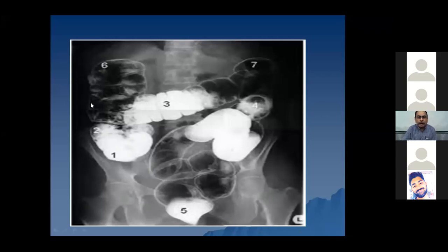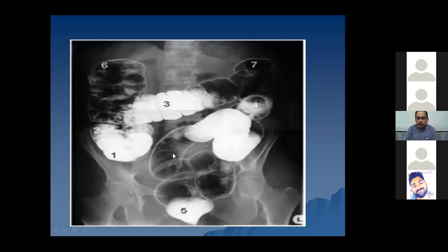There is a second example of intraluminal contrast. Barium has been given - it is an examination called barium enema. The contrast is outlining the large bowel. These are the different parts of the large bowel: the cecum, transverse colon, rectum, the splenic flexure, and the hepatic flexure. It is also a normal examination with no pathology.